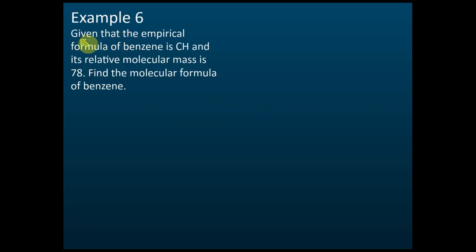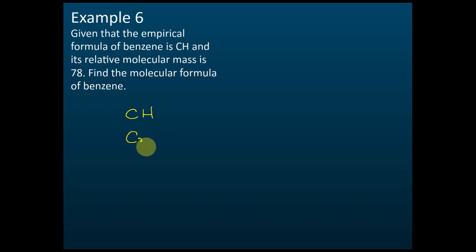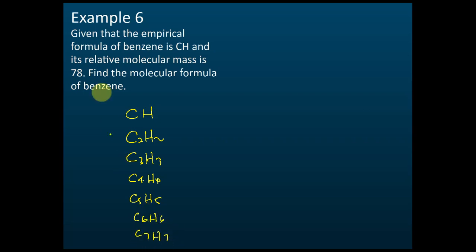Finding the molecular formula. Given that the empirical formula of benzene is CH and its relative molecular mass is 78, find the molecular formula of benzene. The empirical formula is CH, but remember this is only the simplest ratio. Maybe benzene is C2H2, or C3H3, or C4H4, or C5H5, or C6H6, or C7H7. All of these have a simplest ratio of 1 to 1, so all of them have the empirical formula CH. We don't know which one is benzene.